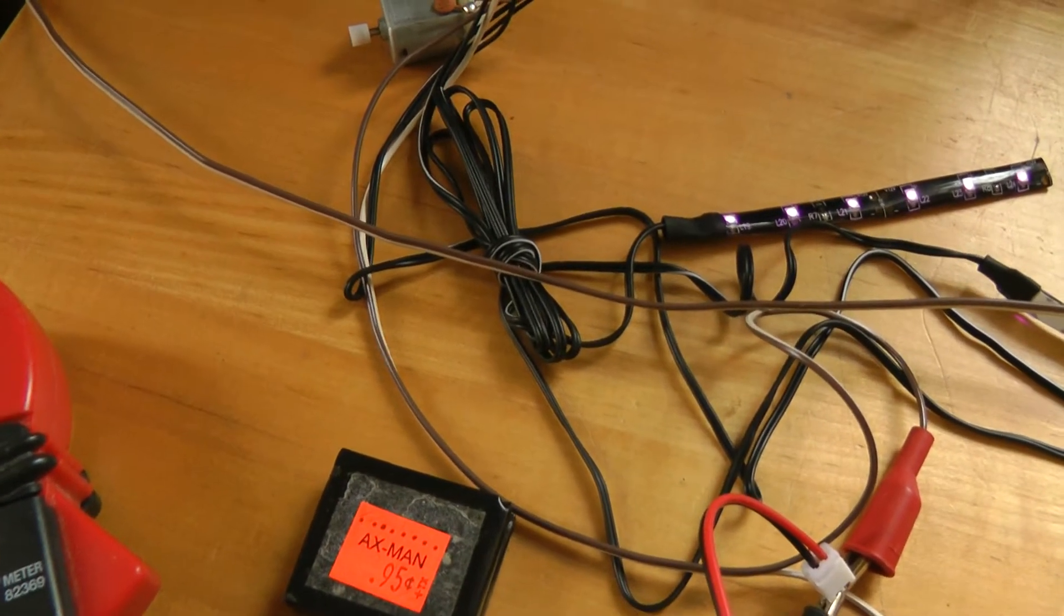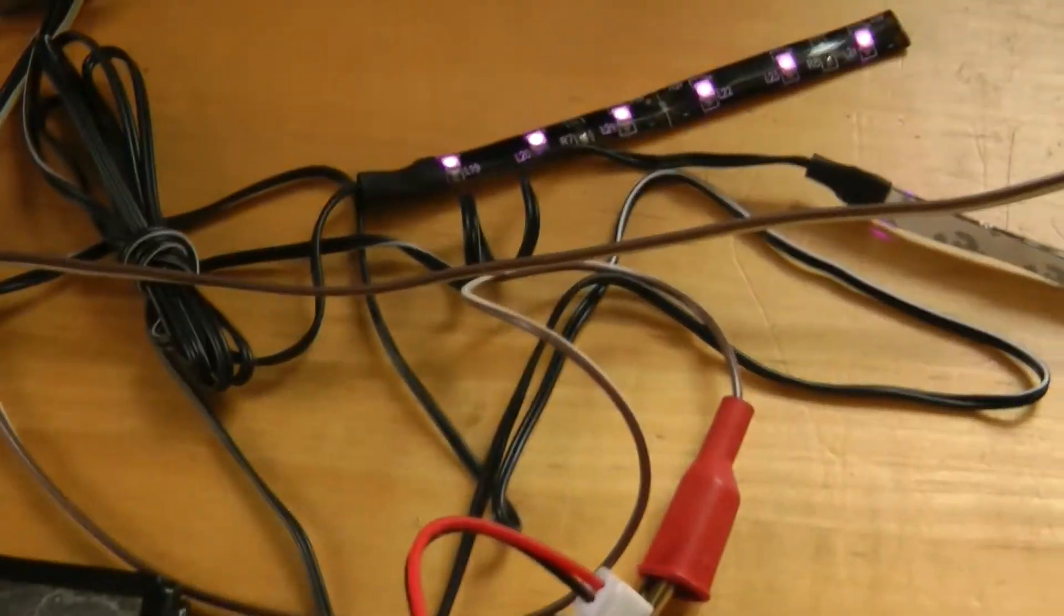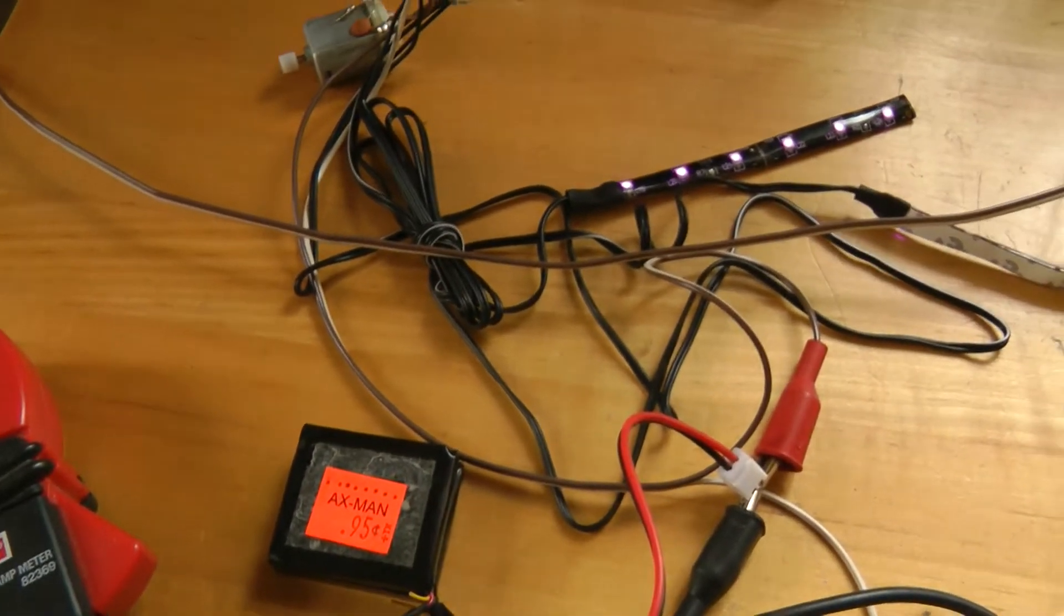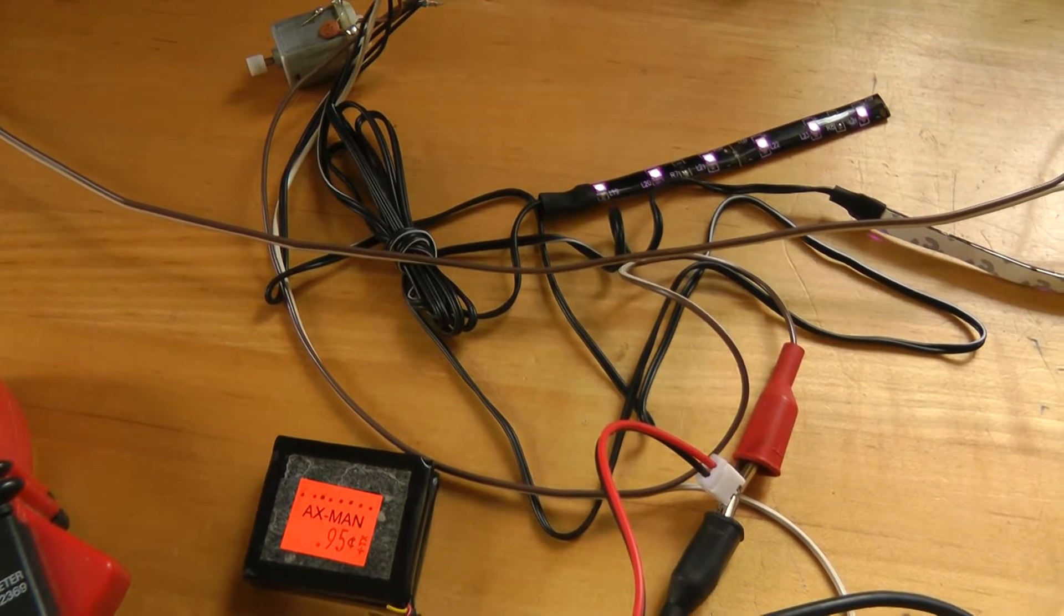So I'm still getting about 7.5 volts or 7.6 volts here even with this motor running and these LEDs on. So I'm going to just let it run for a while, and then I'll see if the solar panel will charge it back up again.